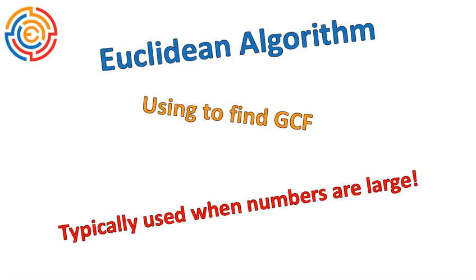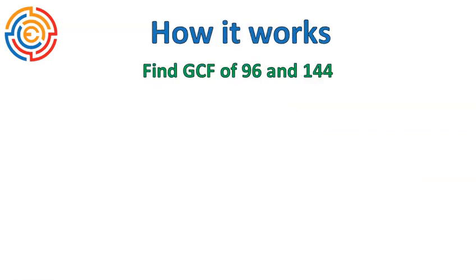A Euclidean algorithm is used to find the greatest common factor. It's typically used with larger numbers, so I would not recommend this for small numbers where you can easily list out the factors and find the greatest common factor. Let's take a look at it using these two numbers: 96 and 144.